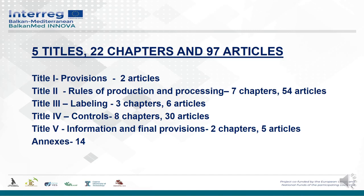Title 1 is titled Provisions and has two articles — it is a short title. Title 2, Rules of Production and Processing, includes seven chapters and 54 articles — it is the longest title. Title 3 is titled Labeling and includes three chapters and six articles. Title 4, Controls, includes eight chapters and 30 articles. Title 5, Information and Final Provisions, has two chapters and five articles.